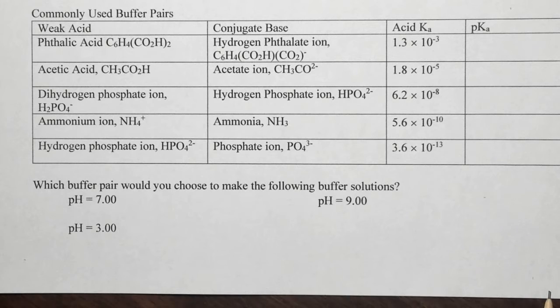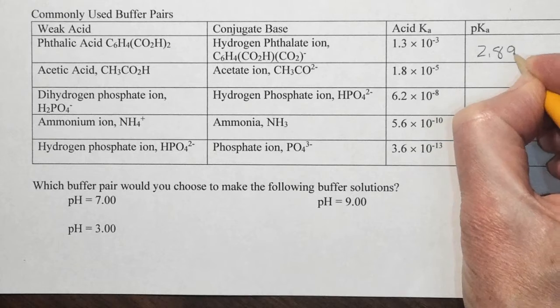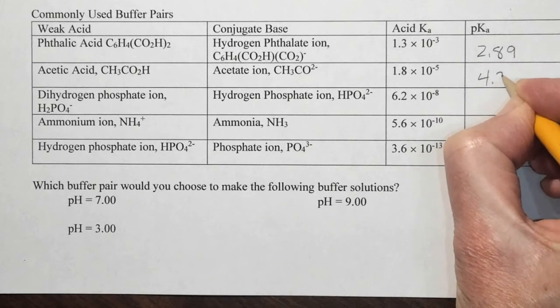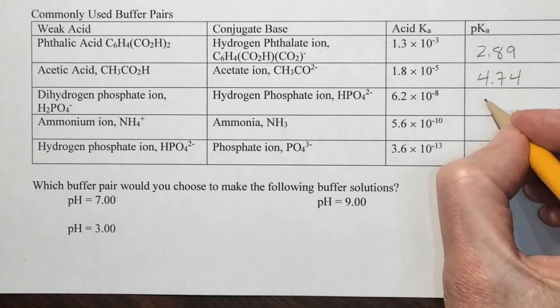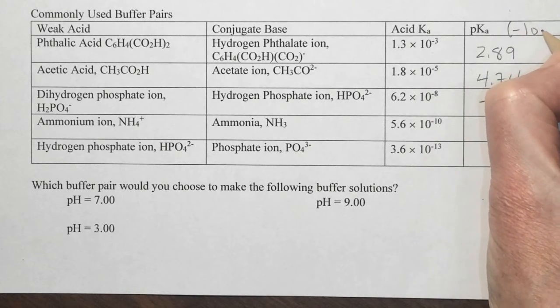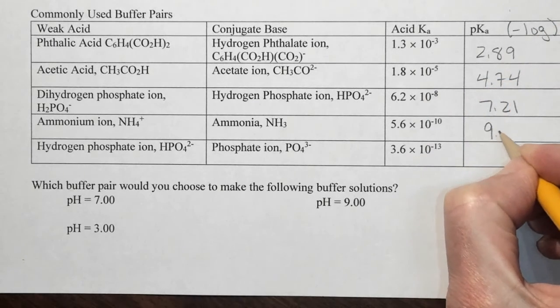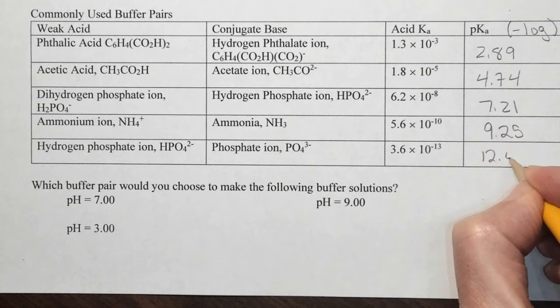Well, first thing we do is we would figure out the pKas. So I already did this. So it would be 2.89, 4.74. I'm just taking the negative log of each one of these numbers. 7.21, so that's the negative log, 9.25, and 12.44.